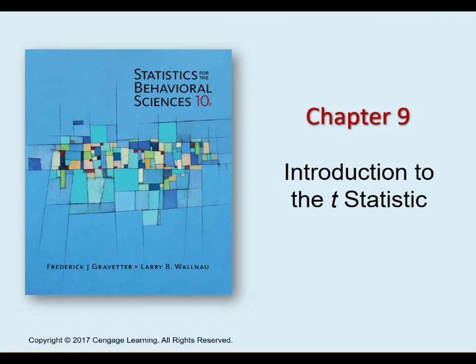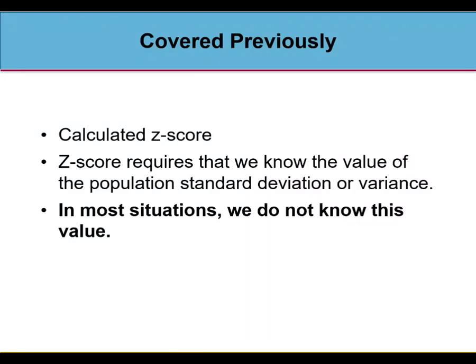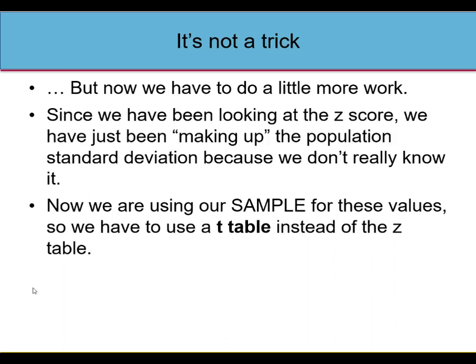We're going to talk about chapters 9 and 10: introduction to the t-statistic, one-sample and two-sample t-statistics. What we talked about before was z-scores, and z-scores require that we know the population standard deviation or variance. In most situations we don't know it, because if we did we wouldn't need statistics.